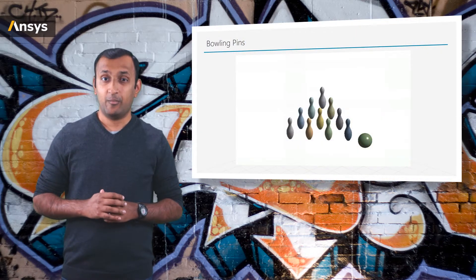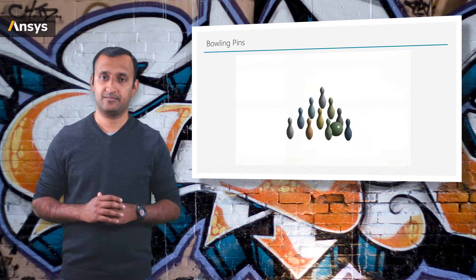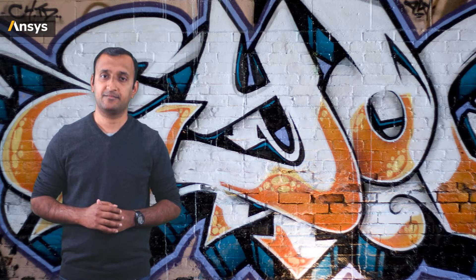Now let's simulate the same scenario but ignore the contact formulation this time. We see that the ball simply drifts through the pins and does not transfer momentum to them. Of course, this is not physical and will always end up with the ball in the gutter. But this shows how contact is not automatically accounted for in the governing equations, which is why we need to define the interaction. This is a simple example that demonstrates the importance of contact.